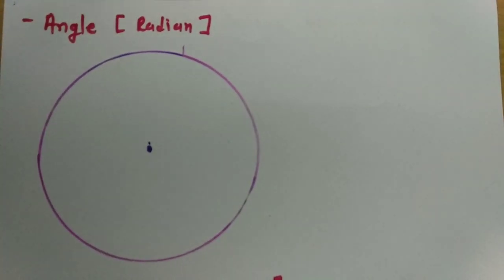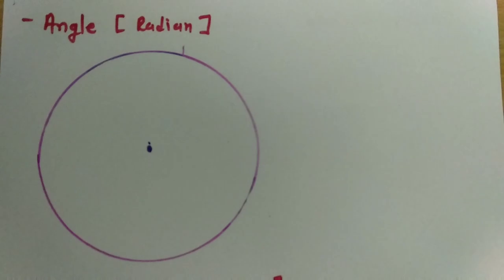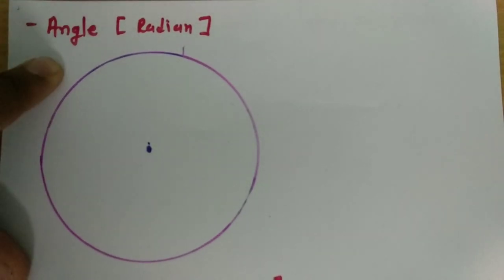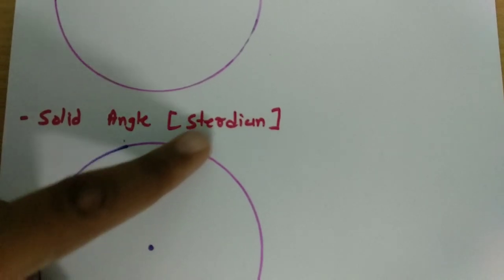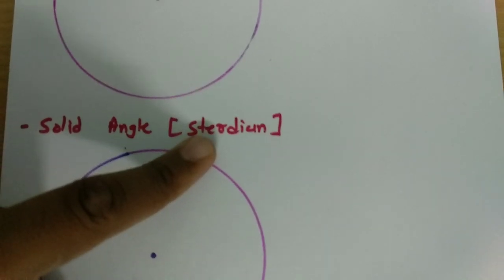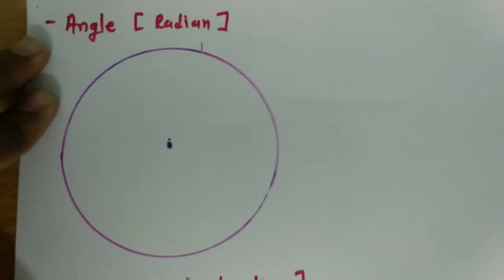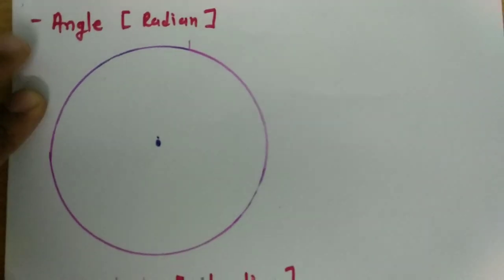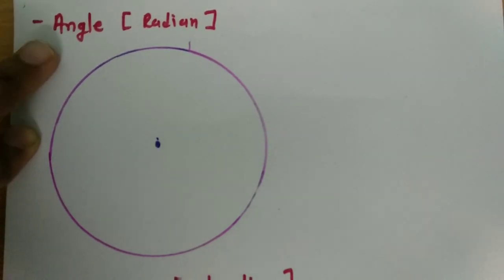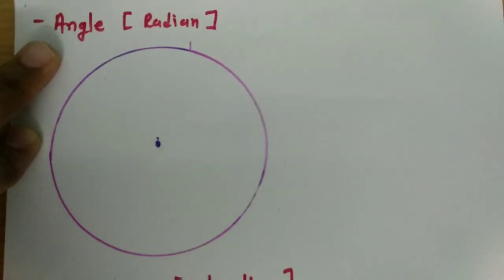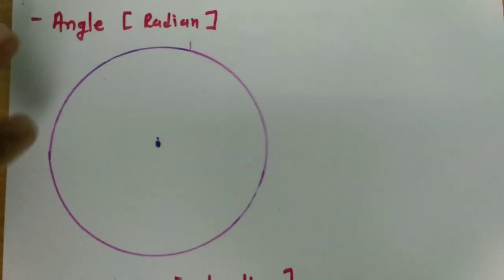Antenna and wave propagation playlist. Here in this session, I will be going to explain angle measurement in radian and solid angle measurement in terms of steradian. First I will be explaining angle measurement in radian. When we talk about measurement of angle in terms of radian, that is angle measurement in two dimensions.